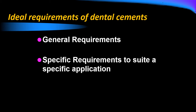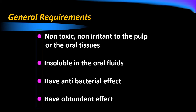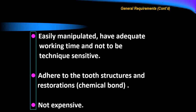What are the requirements of dental cement? We have general requirements and specific requirements for each use. The general requirements are: the cement must be non-toxic and non-irritant to the pulp or oral tissue; it must be insoluble in oral fluids; it must have antibacterial effects and an obtundant or pain-relieving effect. It must be easily manipulated, have adequate working and setting time, not be technique sensitive, and must adhere — meaning it must chemically bond to both the tooth structure and the restoration. It must also not be expensive.